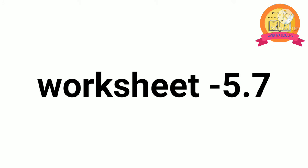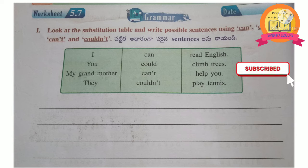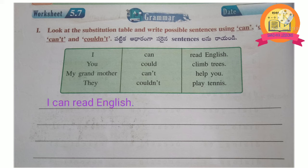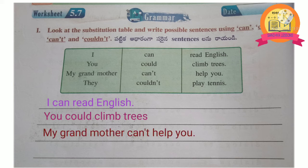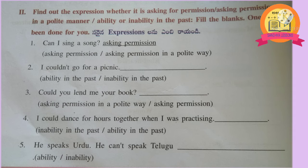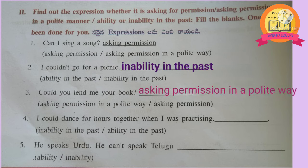Worksheet 5.7, 1st Roman: look at the substitution table and write possible sentences using can, could, can't, couldn't. I can read English. You could climb trees. My grandmother can't help you. They couldn't play tennis. 2nd Roman: find out the expression – whether it is asking for permission, asking permission in a polite manner, or expressing ability or inability in the past. Fill in the blanks. One has been done for you. 1st one: Can I sing a song? – asking permission.